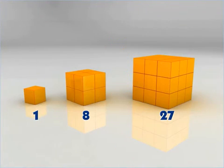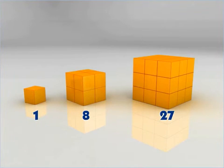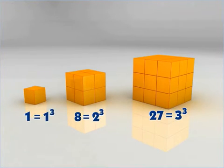The numbers 1, 8, and 27 are perfect cubes or cube numbers. They are called so because they equal the cube of a number.